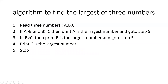Next, the algorithm to find the largest of three numbers A, B, and C. If A is greater than B and B is greater than C, then print A is the largest number and go to step 5. Otherwise, if B is greater than C, then print B is the largest number and go to step 5. Otherwise, print C is the largest number. Step 5: stop. So it is just the description of the procedure in plain English.